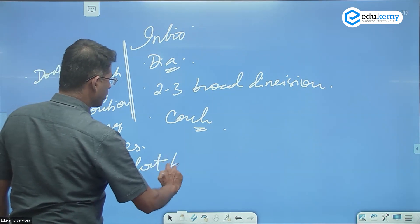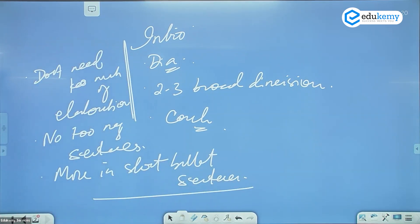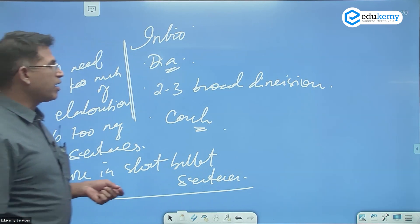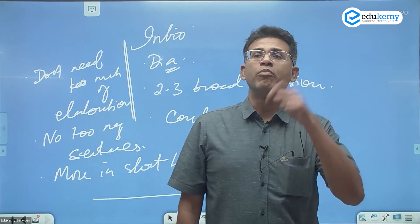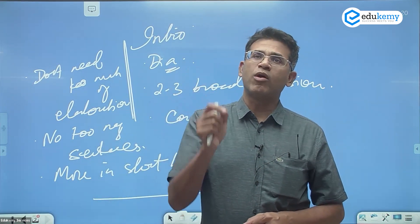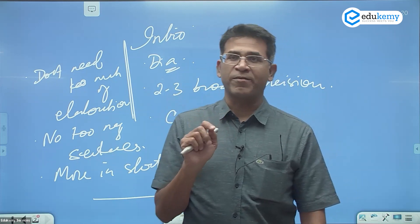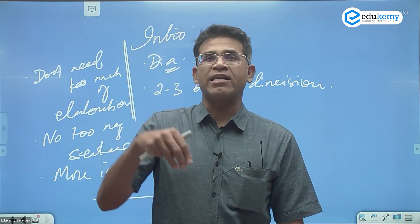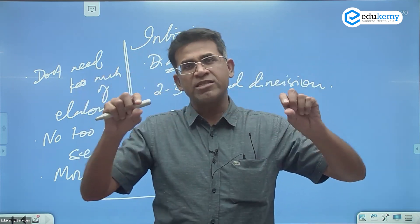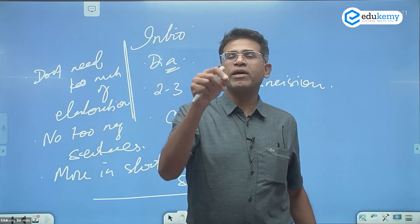You can write more in short bullet sentences. What I mean by writing in bullets is not writing one or two words per bullet. For example, for advantages of Indian agriculture, writing bullets like 'good rainfall, good water, good soil' is a bad way. Instead, write the answer in one sentence per bullet.